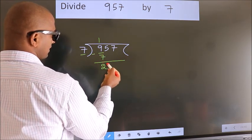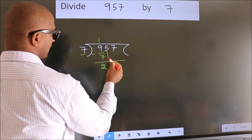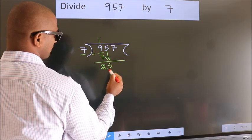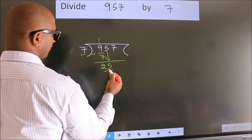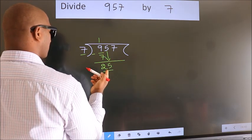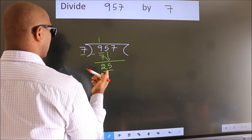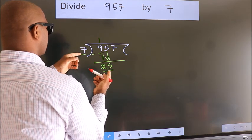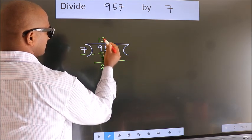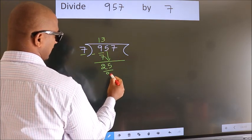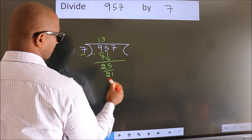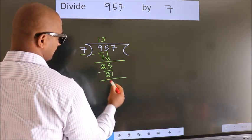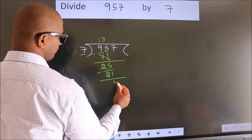After this, bring down the beside number — so 5 down, giving us 25. A number close to 25 in the 7 table is 7 threes, 21. Now we subtract. We get 4.